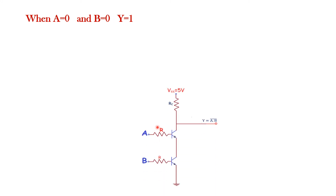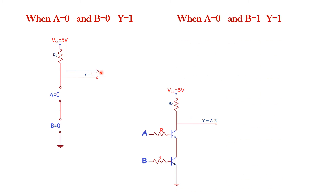Now we are going to see the various conditions. Condition 1: when A equals 0 and B equals 0, the output equals 1. A equals 0 means the transistor is not conducting and is open-circuited. B equals 0 means the second transistor is also not conducting — again open-circuited. In the equivalent circuit, VCC is directly connected to the output, so Y equals 1.